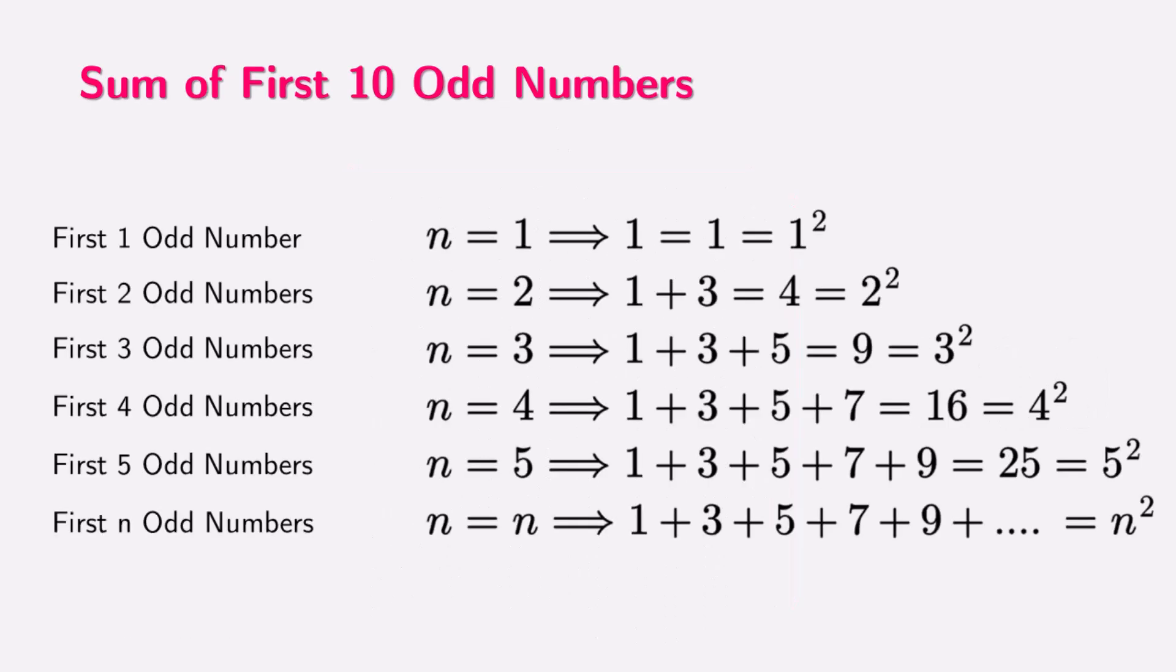Can you see some pattern emerging? Sum of first 1 odd number is 1. Sum of first 2 odd numbers is 4. Sum of first 3 odd numbers is 9. Sum of first 4 odd numbers is 16, and so on.